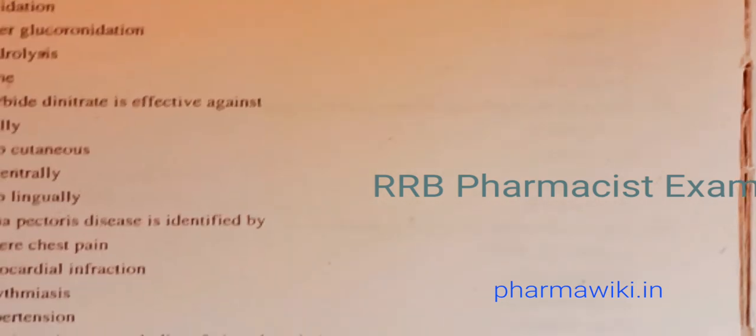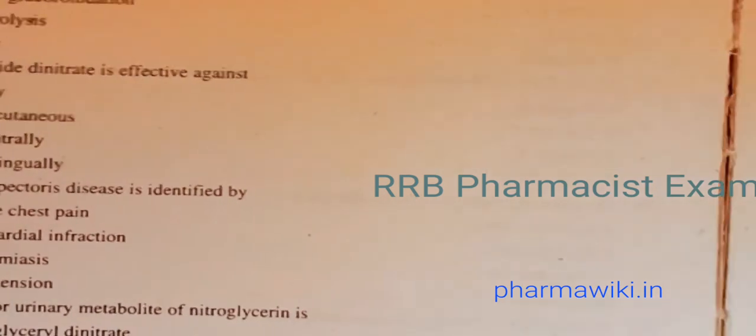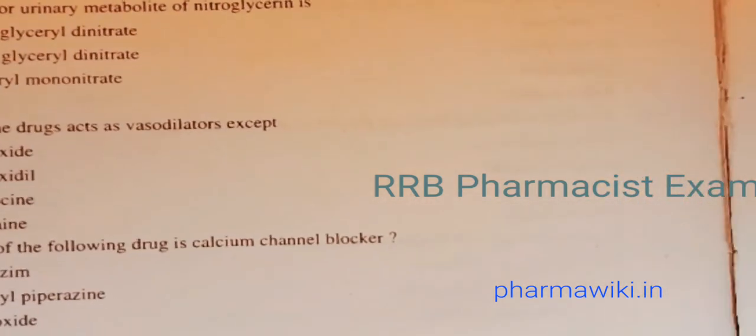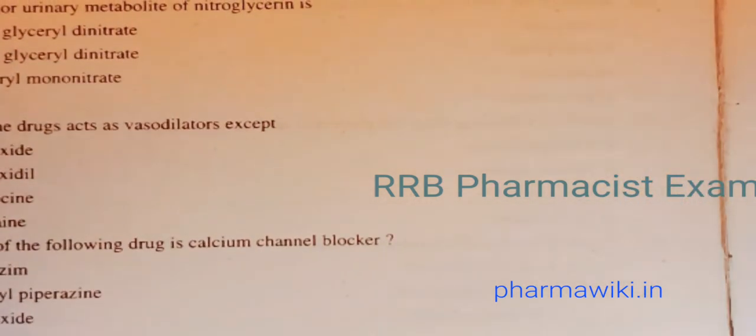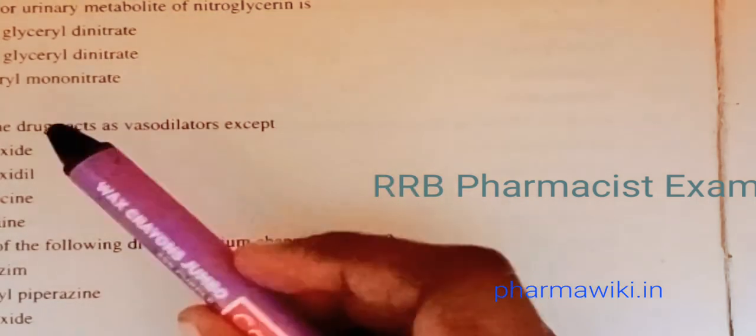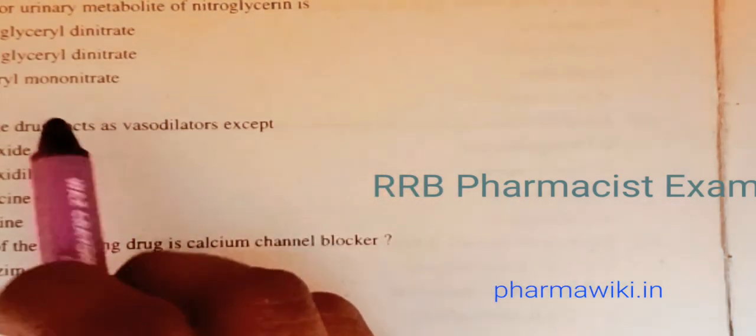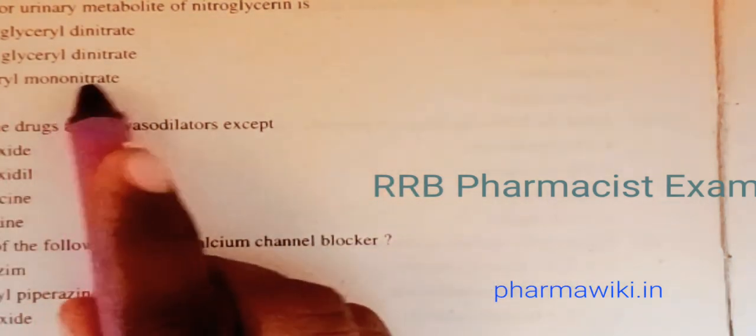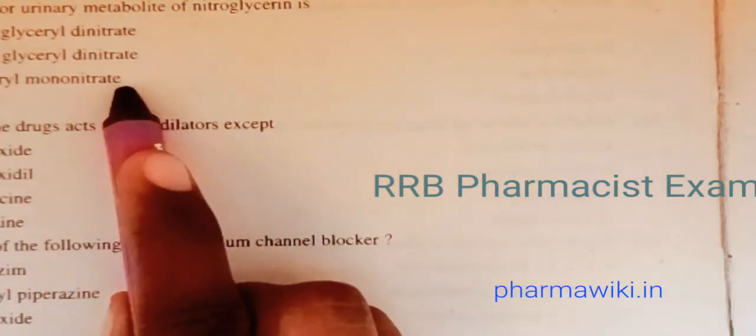Question 65: The major urinary metabolite of nitroglycerin — the answer is glyceryl mononitrate.